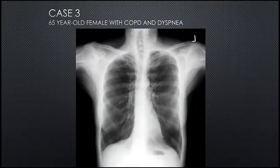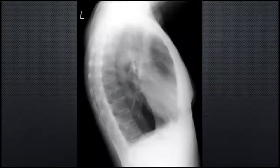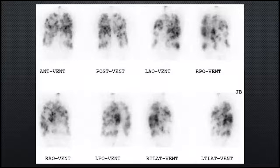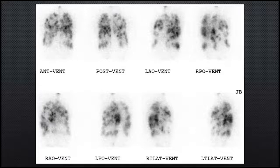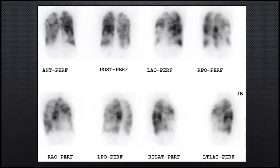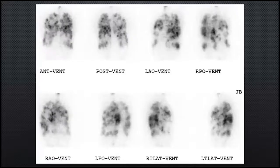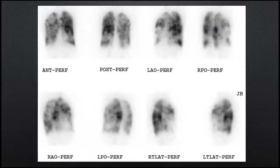Case 3: a patient with COPD and dyspnea. The chest x-ray is very characteristic of COPD. The ventilation study done with DTPA shows a heterogeneous, clumpy appearance of aerosol within the lung — common in COPD. The perfusion shows patchy alterations. Going back and forth, the perfusion overall looks better than the ventilation, and nothing appears mismatched. This is a low probability because heterogeneous perfusion is commonly seen in COPD patients.